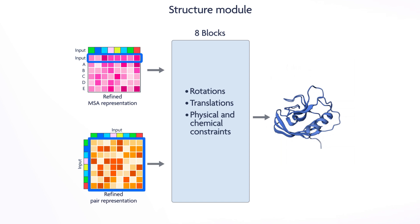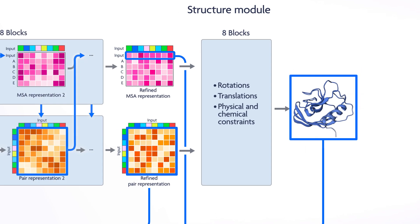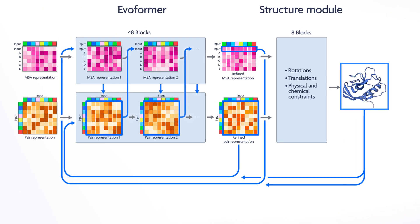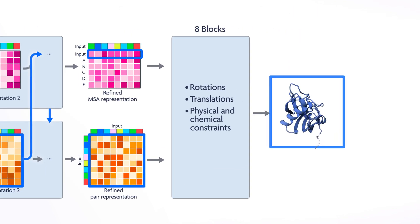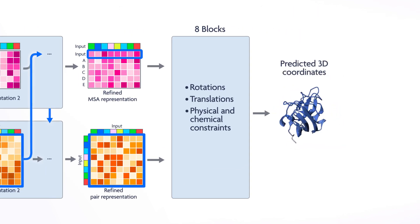The refined models, as well as the output of the structure module, is iterated back through the Evoformer and structure module process three more times for a total of four cycles before it arrives at the final result, predicted 3D atomic coordinates for the protein's 3D structure.